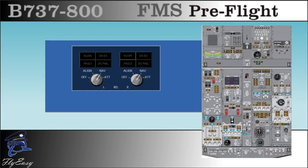Starting FMC Preflight. Align the IRS by moving the IRS switches to NAV. The ON DC lights will come on for 5 seconds during the self-test then go off. The aligned lights will come on for about 10 minutes as the IRS goes through its alignment cycle. They'll go out when the alignment is complete. If the IRS is in the NAV mode for the alignment to complete, you must enter your present position to the IRS.